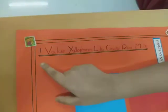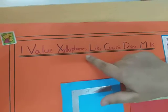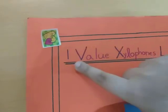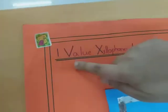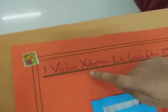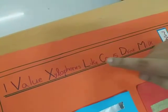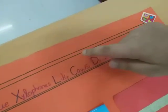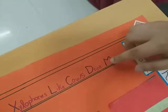Do you find it difficult to remember these letters? Let's look at the mnemonic to remember. The mnemonic is: I Value Xylophones Like Cows Drink Milk. I is the first letter. Next is V — the starting letter of 'value'. Then X, starting letter of 'xylophones'. L from 'like'. C from 'cows'. D from 'drink'. And M from 'milk'. This is the mnemonic to remember the Roman numerals in ascending order.